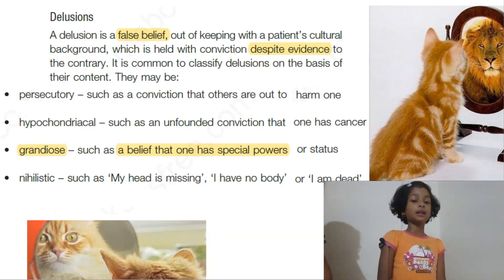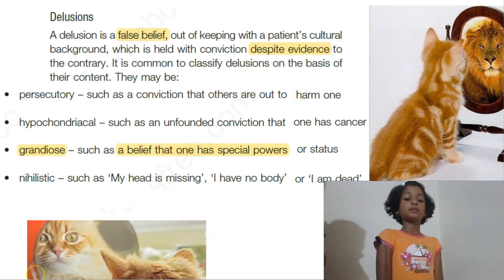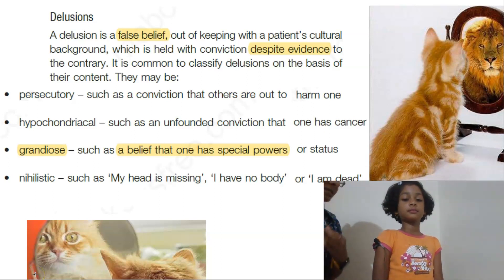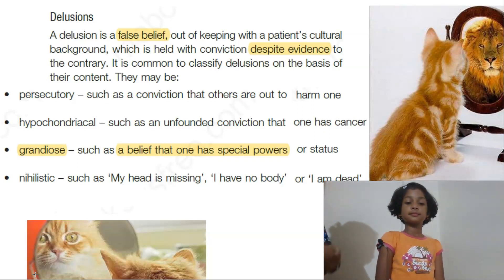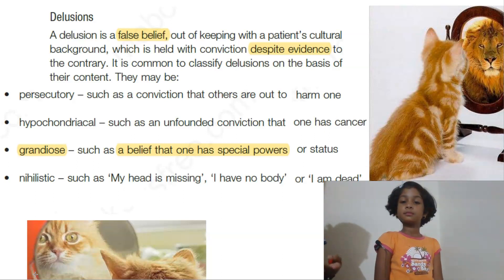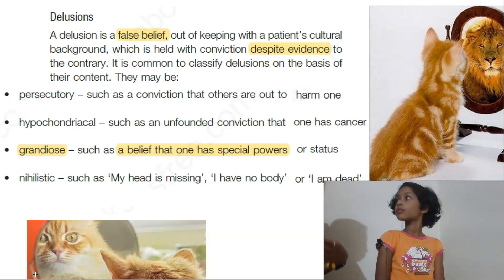Delusion is a false belief. The person has a false belief — though you show proof, though you show evidence, he still believes that. So that is delusion.